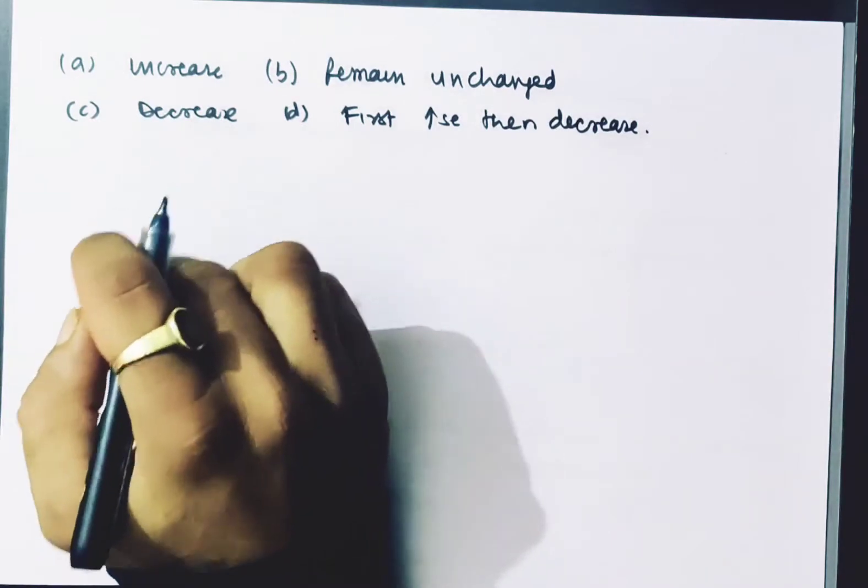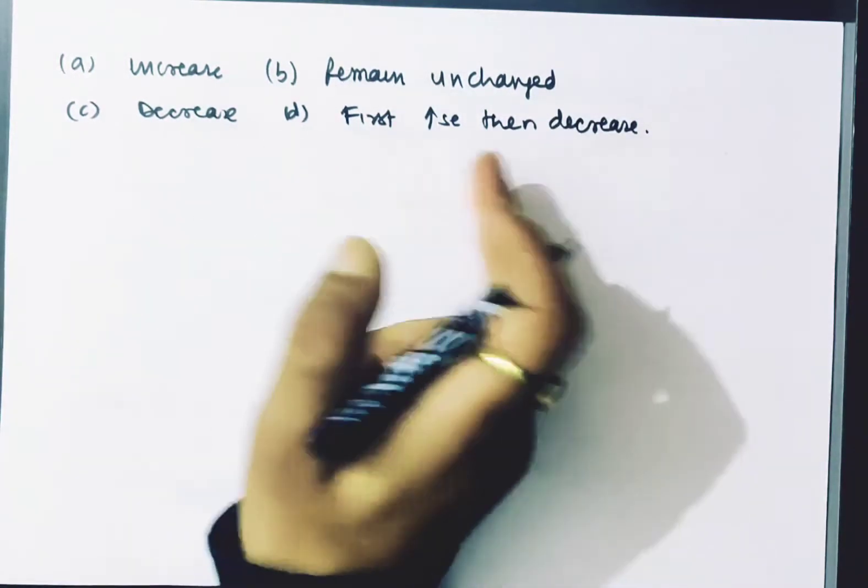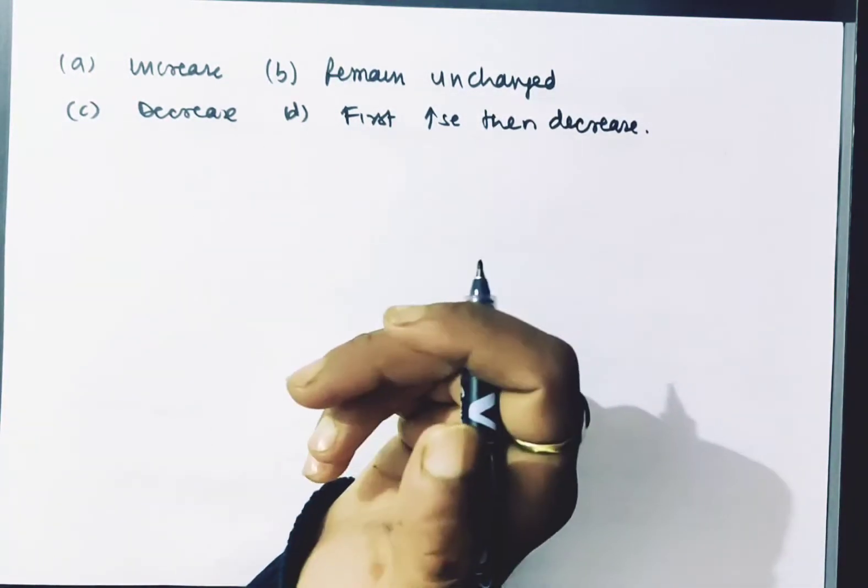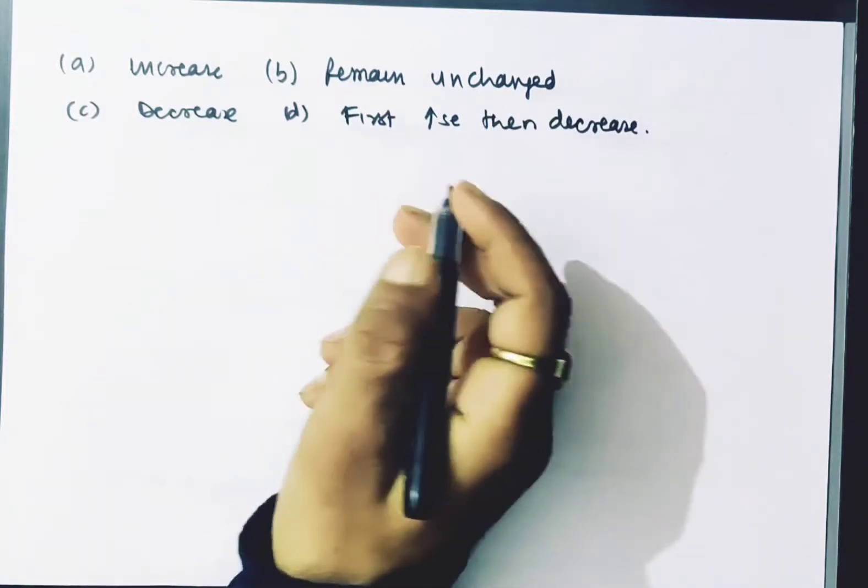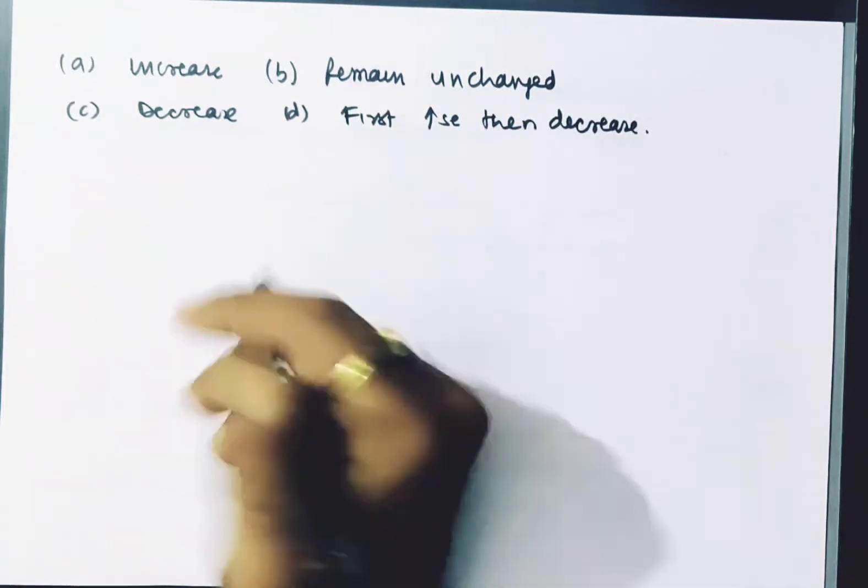So here are the options: increase, remain unchanged, decrease, and first increase then decrease. The question is about mass-energy equivalence. If we make ice,